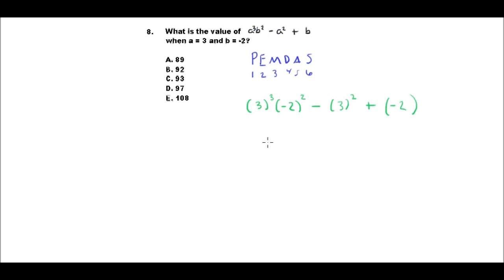3³ is 3 times 3 times 3, which equals 27. So that's 27 times (-2)², which is -2 times -2, which equals 4. Remember, a negative times a negative is a positive, so that's positive 4.